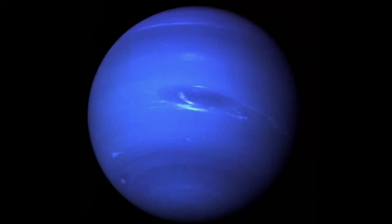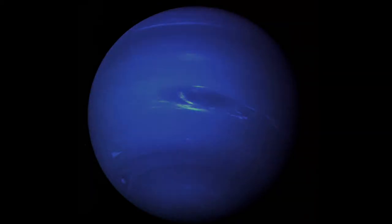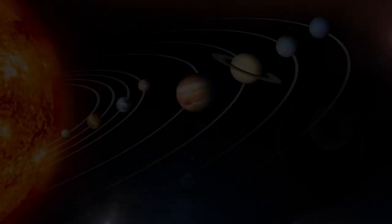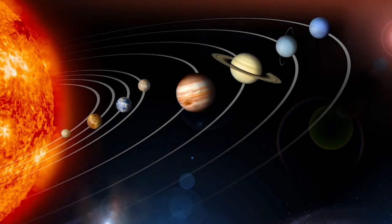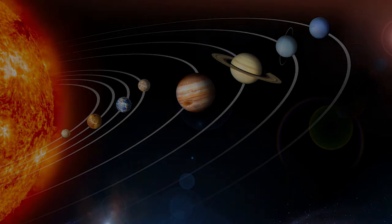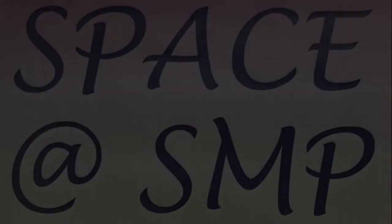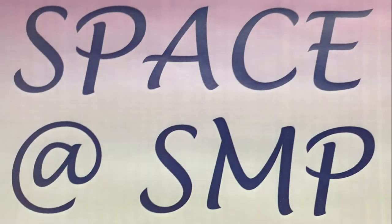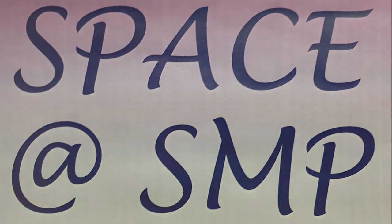In this short film, our Year 6 scientists will demonstrate a simple practical activity that will help you to visualise the distribution of the planets in our solar system as they really are.